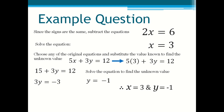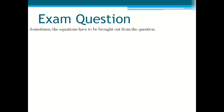These three dots mean 'therefore'. So therefore x = 3 and y = −1. Now we're going to look at an exam question. Sometimes the equations have to be brought out of the questions, like I mentioned at the beginning about the scenario questions.